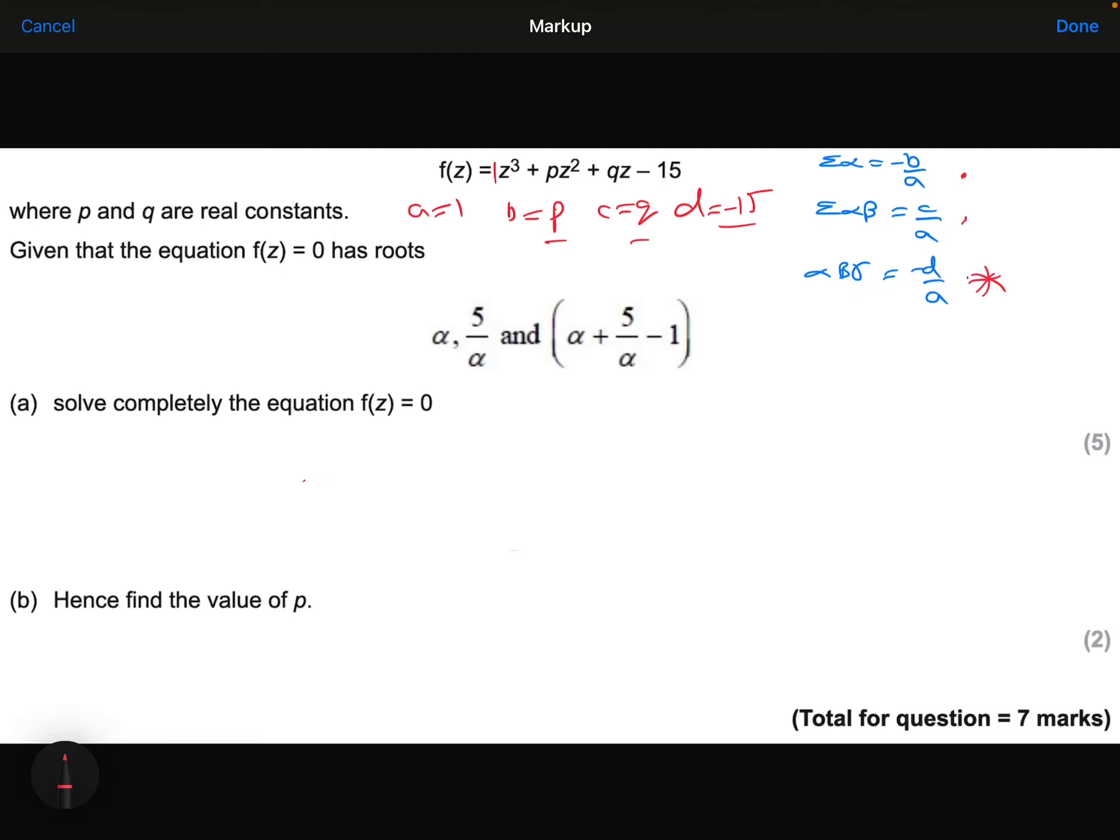So the product of my three roots, the product of these three things, is equal to minus d over a. Alpha times 5 over alpha times alpha plus 5 over alpha minus 1 equals minus minus 15, so plus 15 divided by 1 is 15. The alphas at the front will cancel out, and multiplying through those brackets, I'll get 5 alpha plus 25 over alpha minus 5 equals 15.